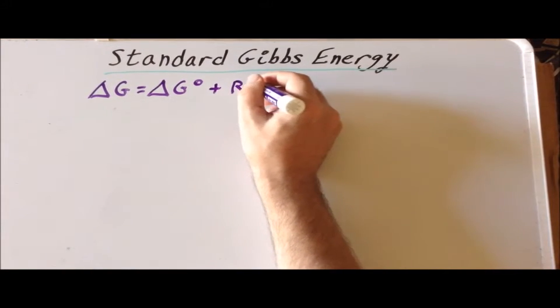First, recall that the Gibbs energy, delta G, is equal to the standard Gibbs energy, delta G naught, plus RT times the natural log of Q, where Q is the reaction quotient for the reaction.